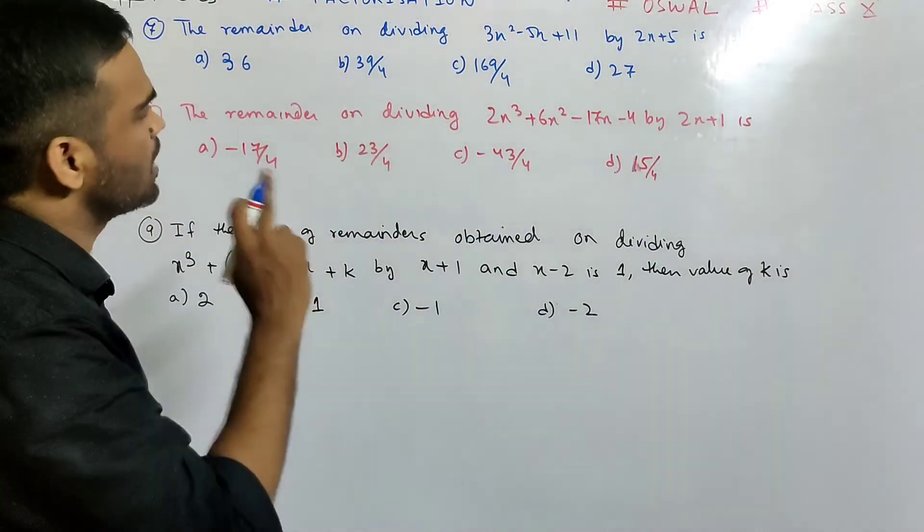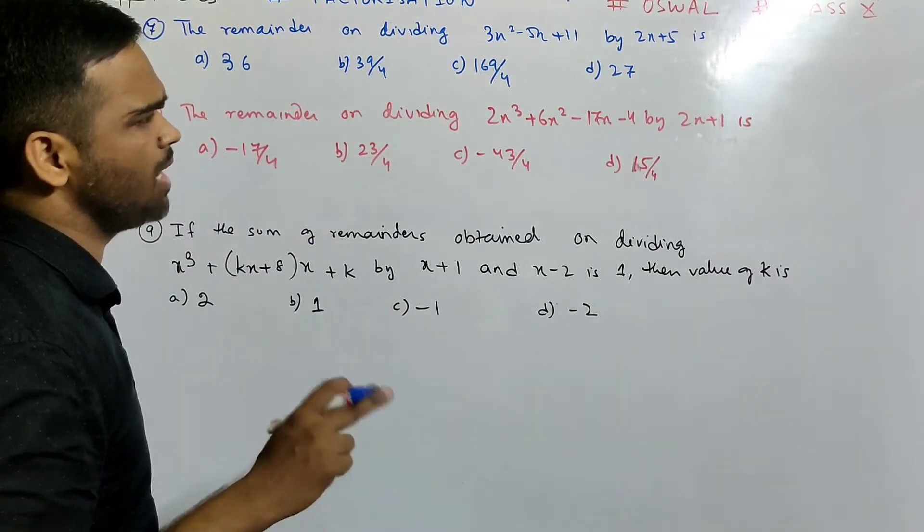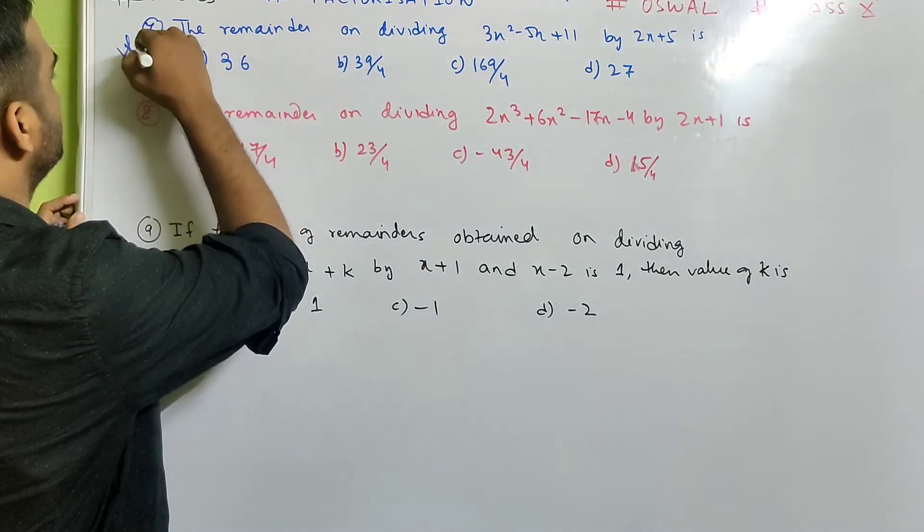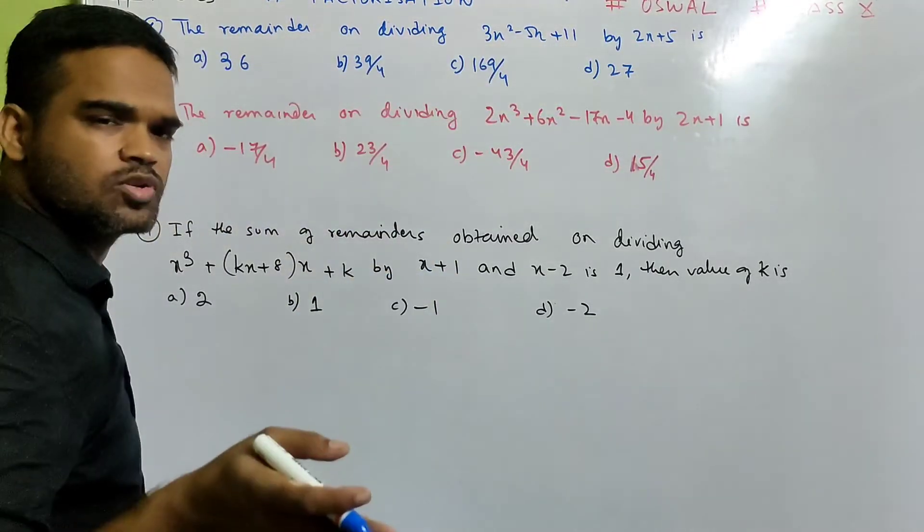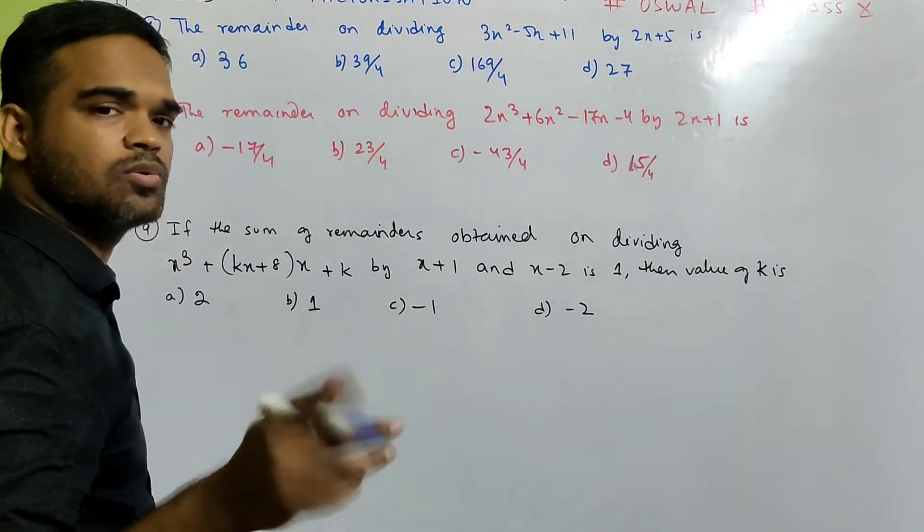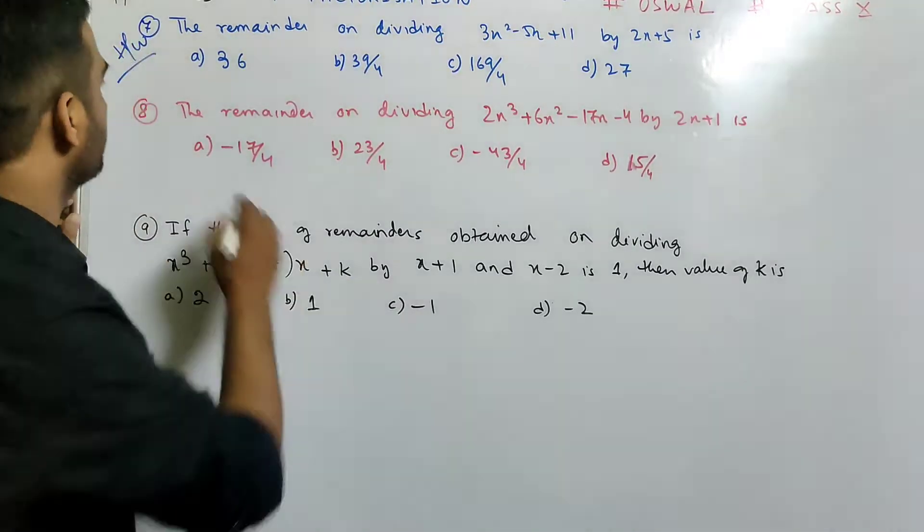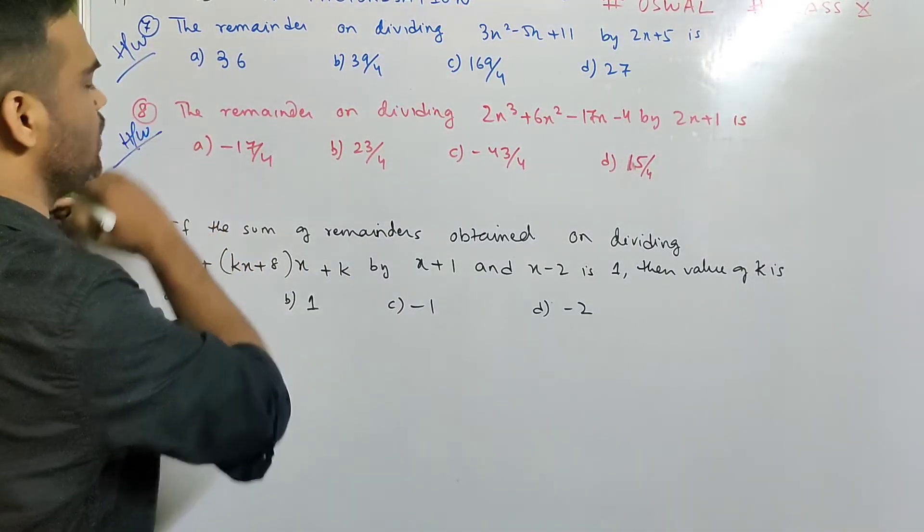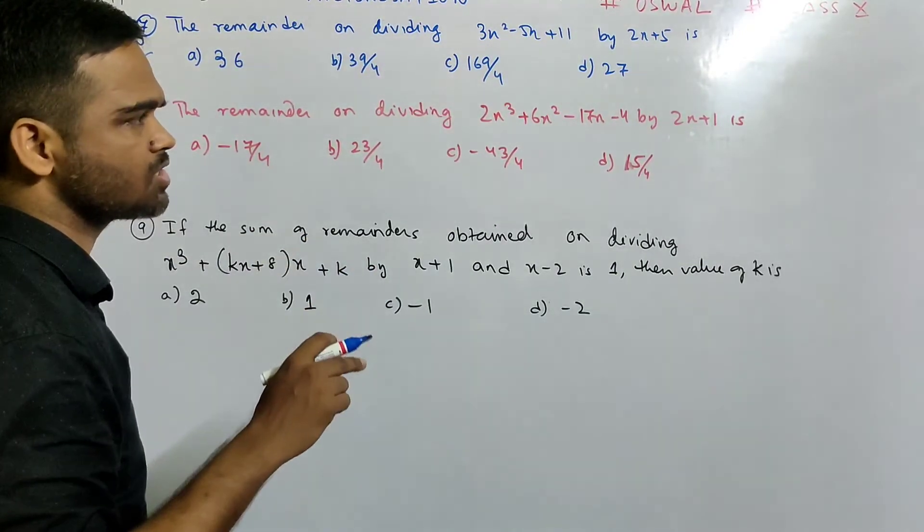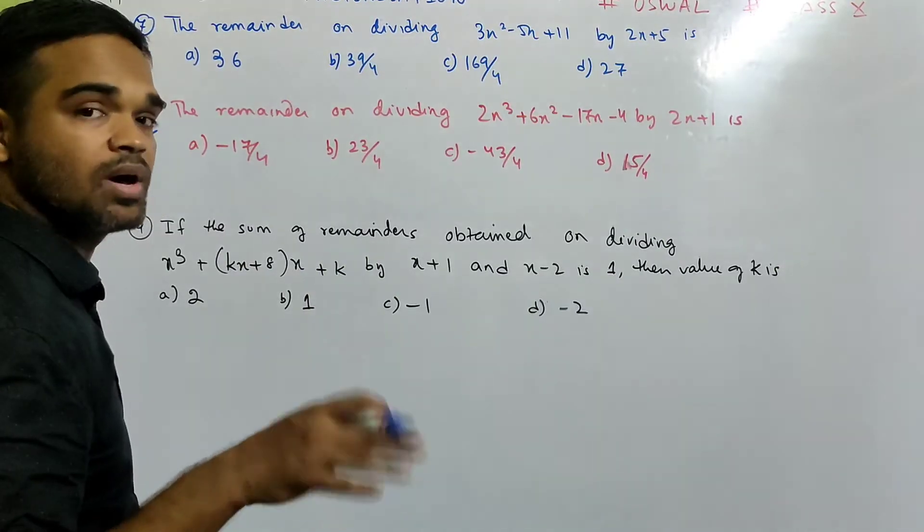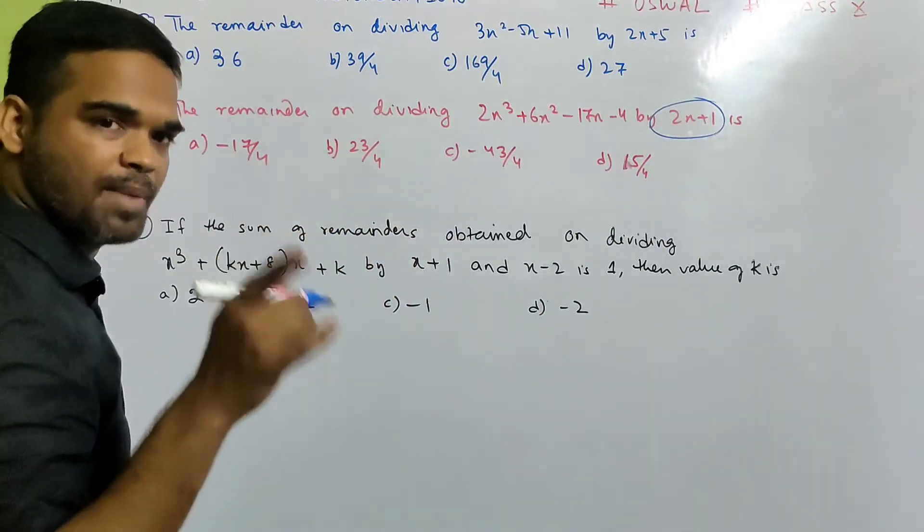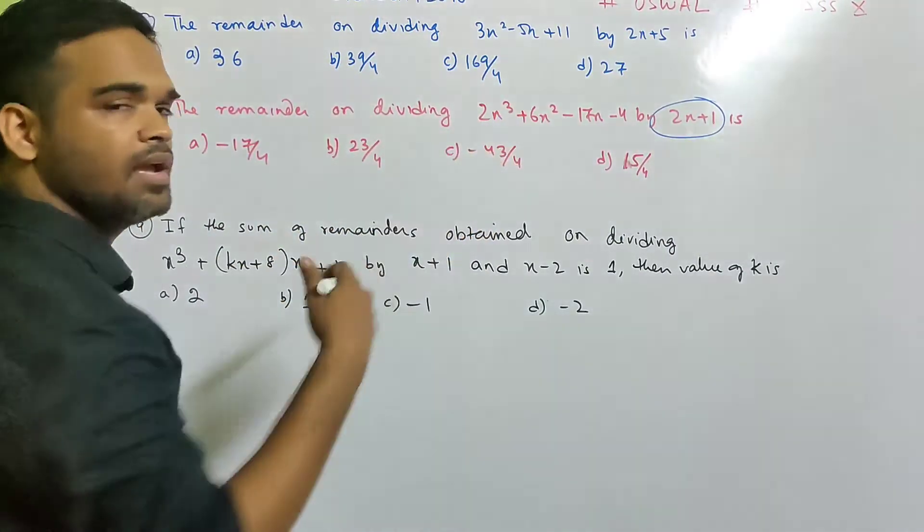Now let us do the next sum. Now look at number 7. The remainder on dividing 3x square minus 5x plus 11 by 2x plus 5 is. We have done a lot of sums like this. Write on your own. 2x plus 5 equals to 0. So x equals to minus 5 by 2. Instead of x you put minus 5 by 2 and solve it. Whatever comes is your remainder. Number 8 is also your homework. You can write on your own. The remainder on dividing 2x cube plus 6x square minus 17x minus 4 by 2x plus 1 is. Same pattern.